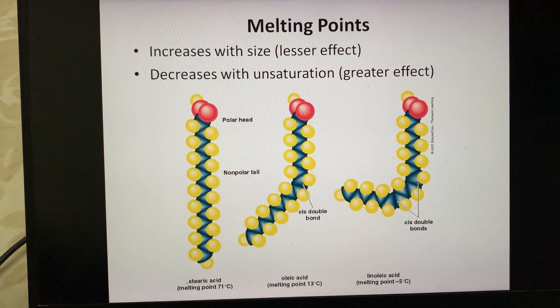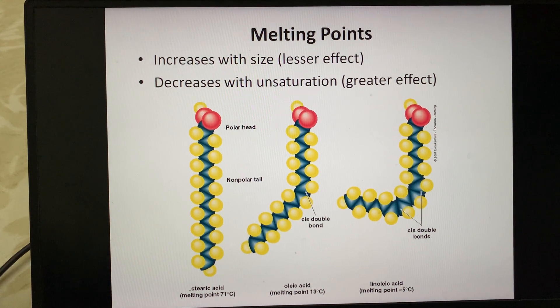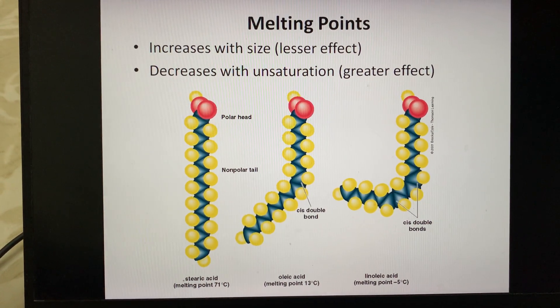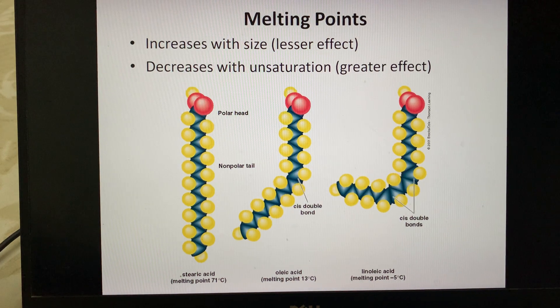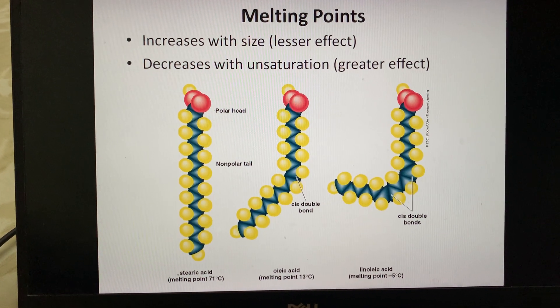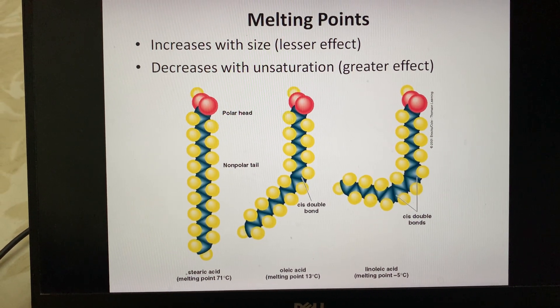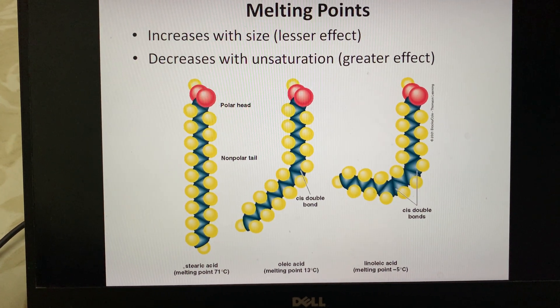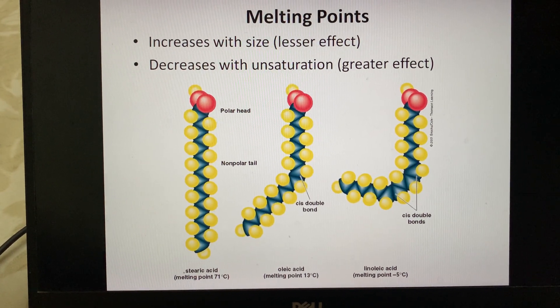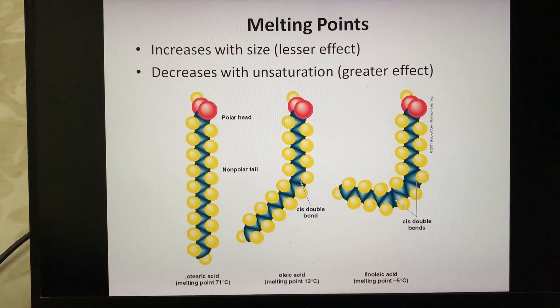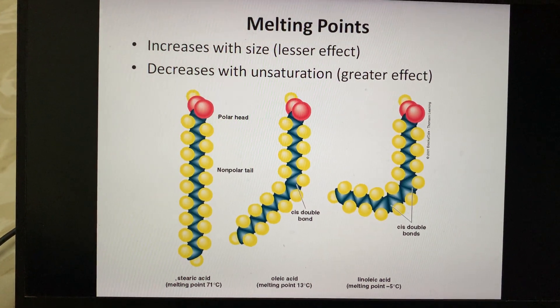Melting point is less affected by the size of the chain. However, if there is unsaturation or saturation, melting point varies greatly. You can see in the structures: a straight chain with no double bond has a melting point of 71 degrees Celsius. For oleic acid with the same length but a cis double bond, the melting point decreases to 13 degrees Celsius. With two cis double bonds in linoleic acid, it decreases even further to minus 5 degrees Celsius.